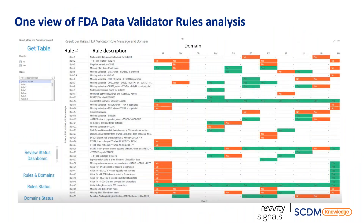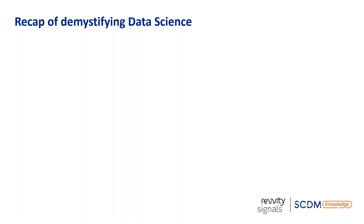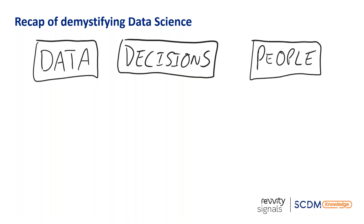Our colleague David Molina will give you a live demo of this dashboard shortly. The primary takeaway here: on the left you see the FDA rule number and description, and moving to the right you see a variety of red and green blocks parsed out by domain. The red ones identify rules by domain that are not compliant. You can click on them and drill down further. David will show you more about this and the configurability. So going back to where we started — data, decisions, and people — how can they be tied together to enable data science for clinical data managers?